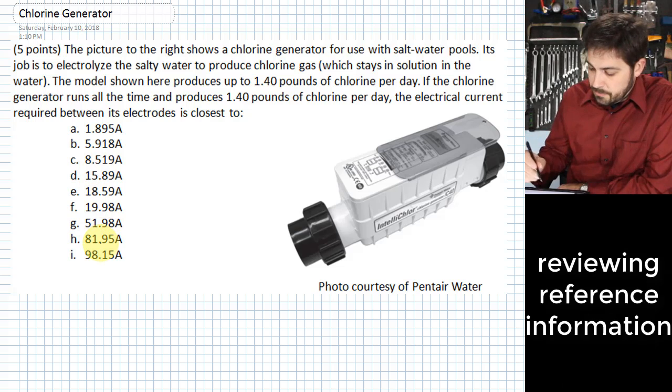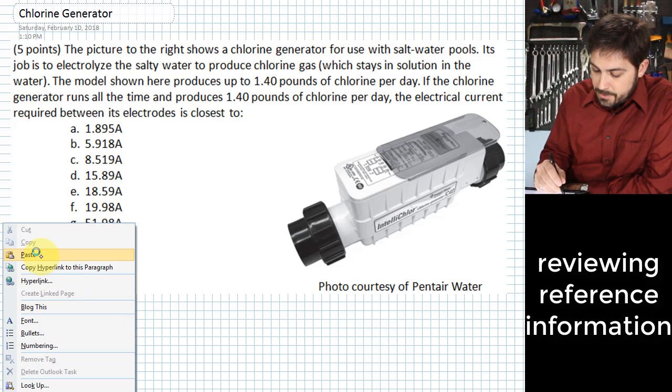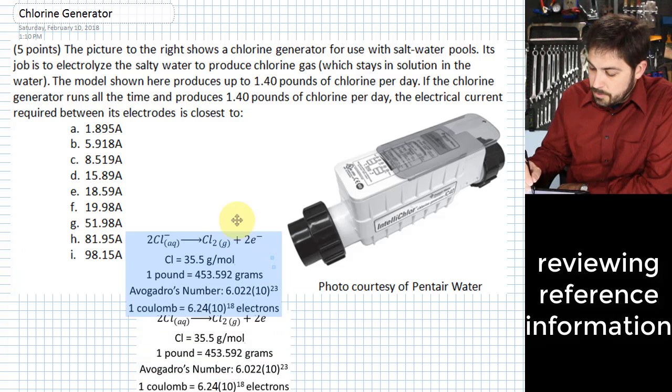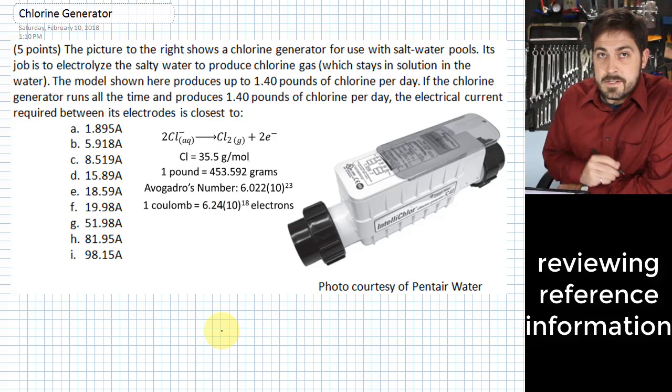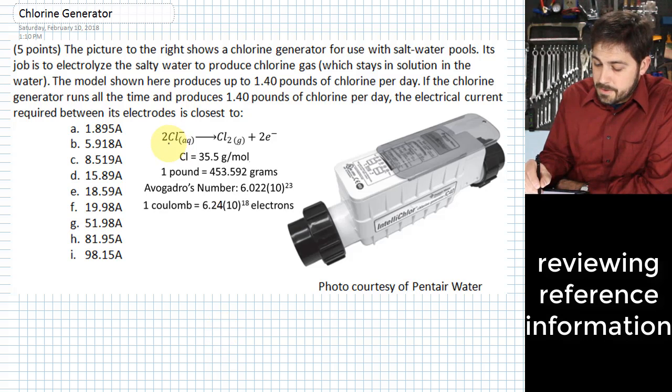So what we're going to do first is identify some reference information here that would be available if you were taking this, for instance, on an exam. This is some reference information that would be available in that case. One of the things is, what is that chemical reaction? The other thing you see here is the weight per mole for chlorine. We also have a conversion for pounds, Avogadro's number, and of course, what a Coulomb is in terms of number of electrons.